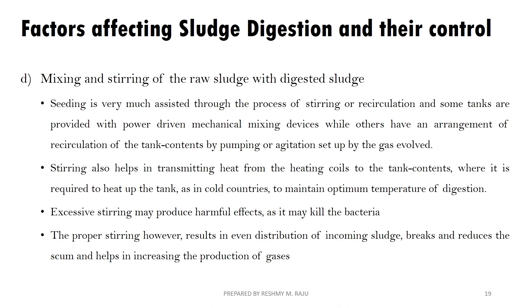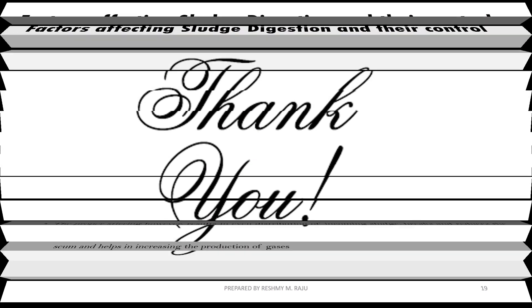The next factor is mixing and stirring of raw sludge with digested sludge. Mechanical mixing devices are used, while others use recirculation of tank contents by pumping or agitation set up by gas evolved. Stirring also helps in transmitting heat from a heating coil to the tank contents, required in cold countries to maintain optimum digestion temperature. Excess stirring will kill the bacteria. Proper stirring results in even distribution of incoming sludge, breaks and reduces scum, and helps increase gas production.